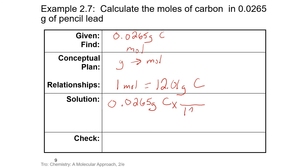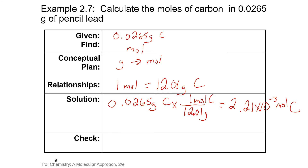We want our grams to cancel, so the 12.01 grams goes on the bottom and one mole of carbon goes on top. We calculate the moles of carbon and get 2.21 times 10 to the negative third moles of carbon. This number makes sense because our grams are much less than one mole weighs, so we would expect the moles of carbon to be less than one.